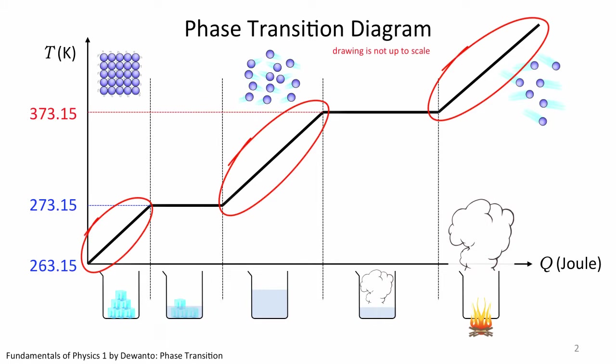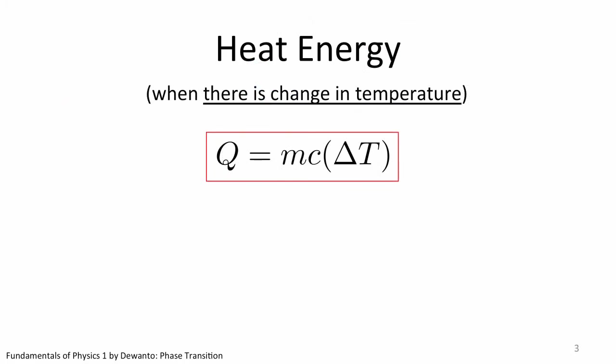But before we get into that, I would like you guys to pay attention to the two different characteristics in this phase transition diagram. First there is this portion where the temperature increases linearly as heat is being supplied. In these stages, the matter does not undergo any phase change. The equation that describes these stages is given by Q equals M times C times delta T.